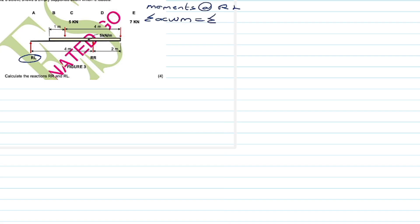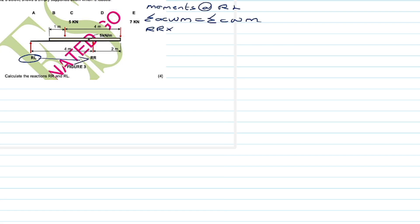We start with RR since it's going in the anti-clockwise direction. So we write RR, and we multiply by the distance it is from RL — you can see it is four meters apart — so we say RR times 4. The only force going in the anti-clockwise direction is RR; all other forces are going downwards. This question came from December 2015, Question 3.